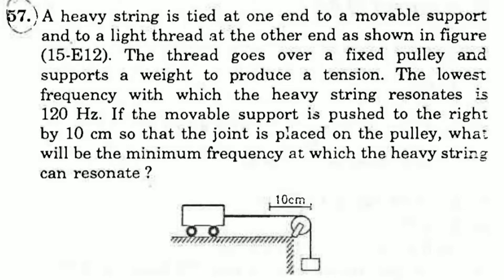A heavy string is tied at one end to a movable support and to a light thread at the other end as shown in the figure. The thread goes over a fixed pulley and supports a weight to produce tension. The lowest frequency with which the heavy string resonates is 120 Hz. If the movable support is pushed to the right by 10 cm so that the joint is placed on the pulley, what will be the minimum frequency at which the heavy string can resonate?